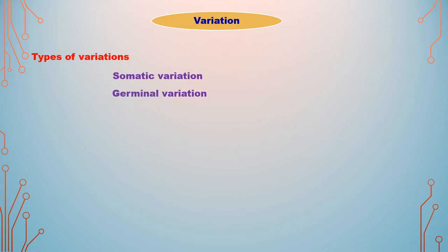Next one: germinal variation. Germ means gamete cell — germ cell or reproductive cell. These variations occur in the germ cell, that is the gamete. They are inherited, meaning passed to the next generation. They may be present in the ancestor or occur suddenly. They are classified into two: first, continuous variation. These are small variations which occur among individuals of a population. They fluctuate and through gradual accumulation lead to changes. Examples include skin color, height, weight, and eye color.